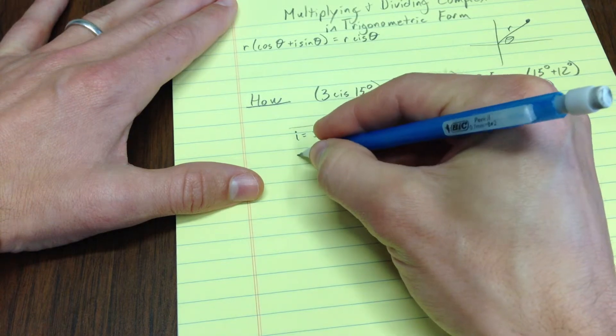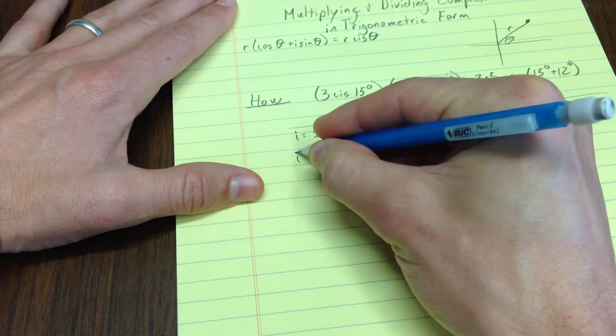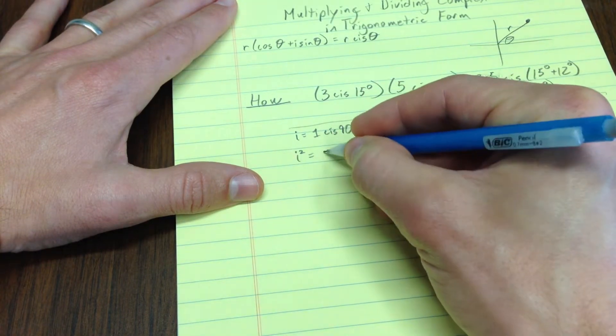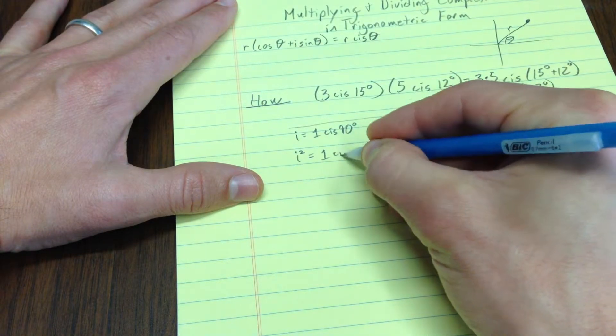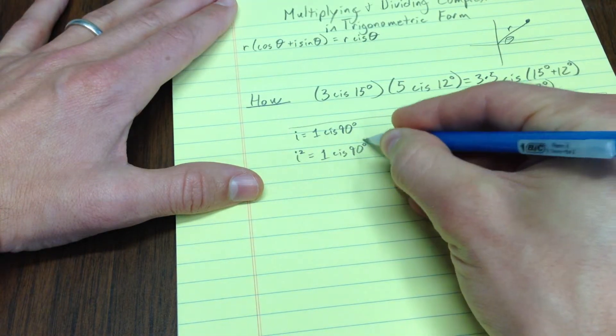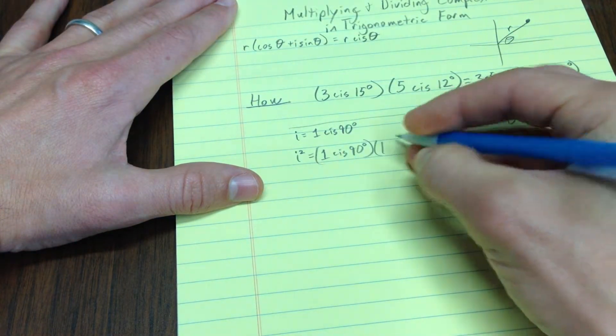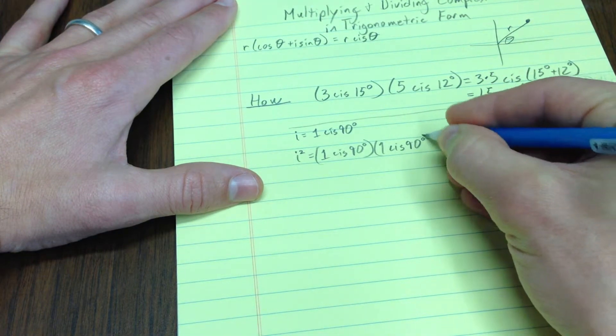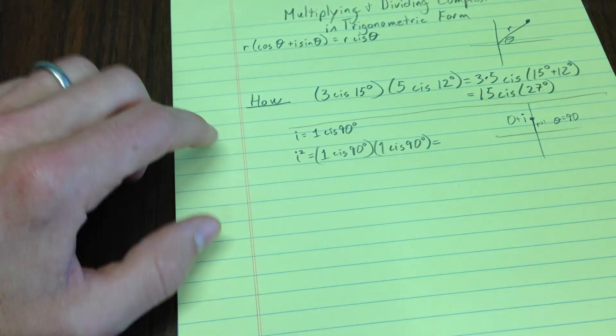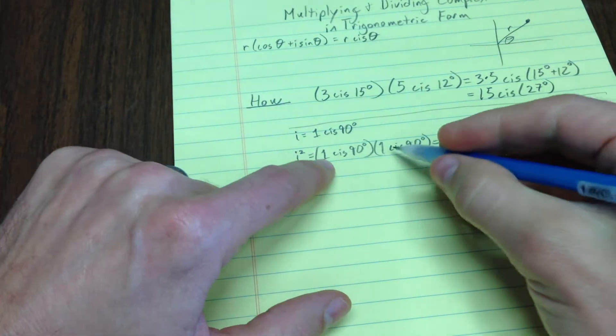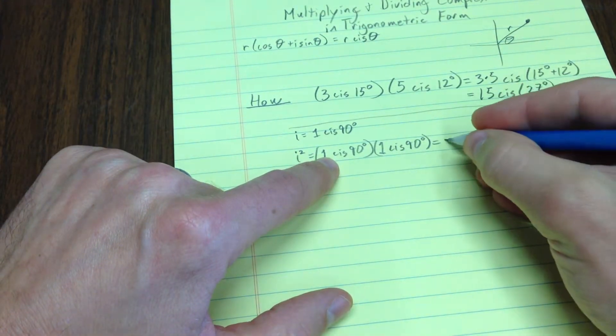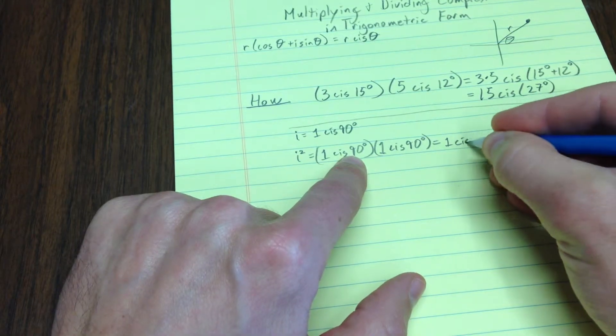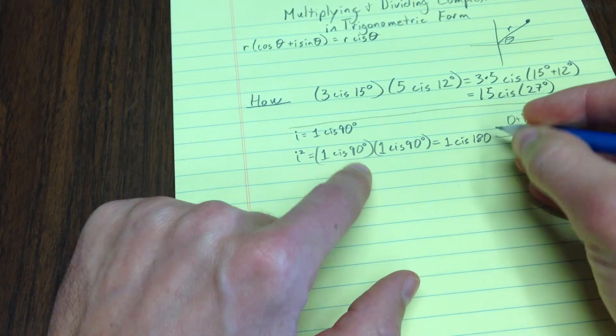The question is, what is i squared? i squared, well I guess that's 1 cis 90 times 1 cis 90. If you believe what I told you up here was the rule, you'll multiply the ones, so you get 1 cis 180.